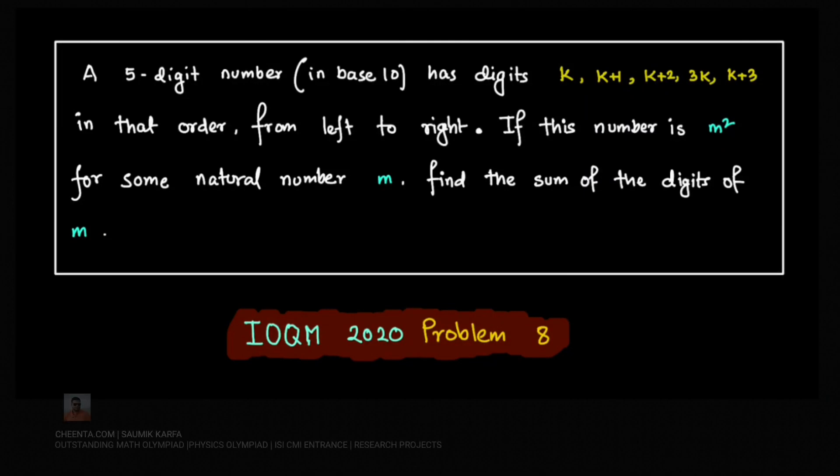This is IOQM 2020 problem number 8. The problem says a 5-digit number in our decimal number system has the digits k, k+1, k+2, 3k, k+3 in that same order from left to right.